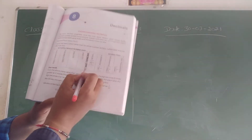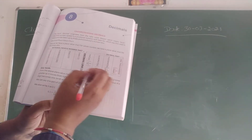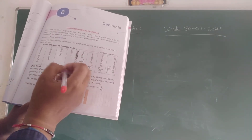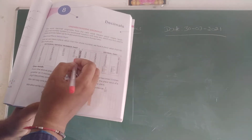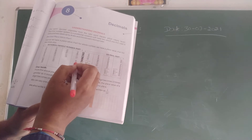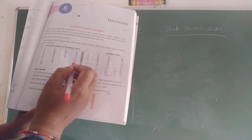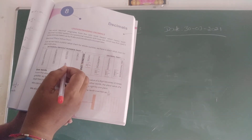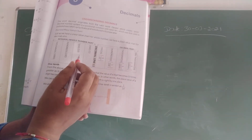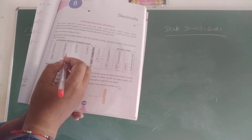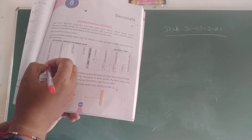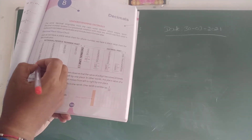In decimals, there is a right hand side and left hand side. In the left hand side, what is there? Ones means one. Tens — T-E-N-S — tens means ten. Hundreds means hundred. Thousands means thousand.